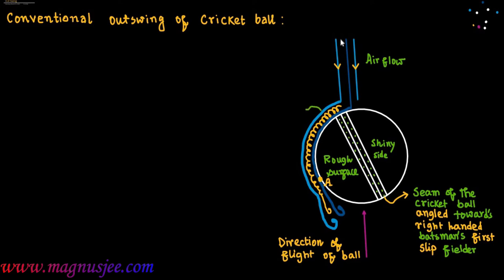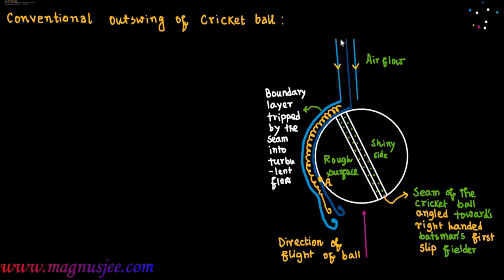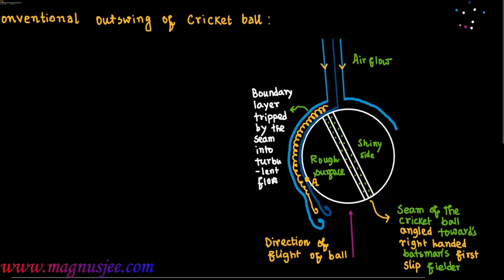This thin layer of air touching the rough surface of the cricket ball is the boundary layer. The thin layers of air flowing and touching the two sides of the cricket ball are called boundary layers. This boundary layer is tripped by the seam of the cricket ball into turbulent flow — irregular flow. On the other side, on the non-seam side of the cricket ball, air flow will be in laminar state.